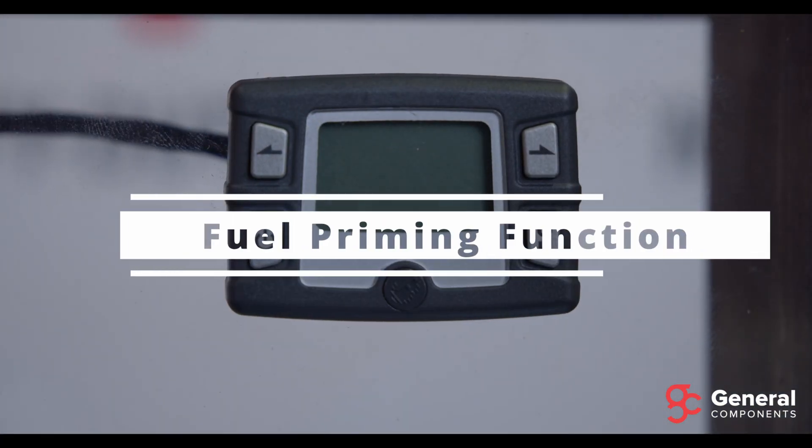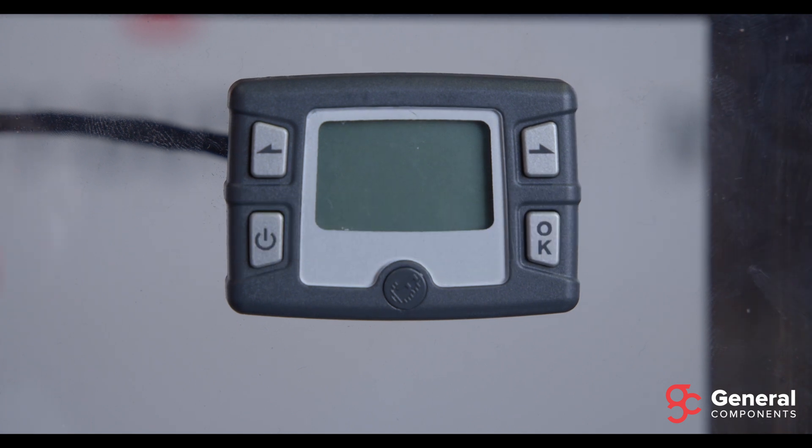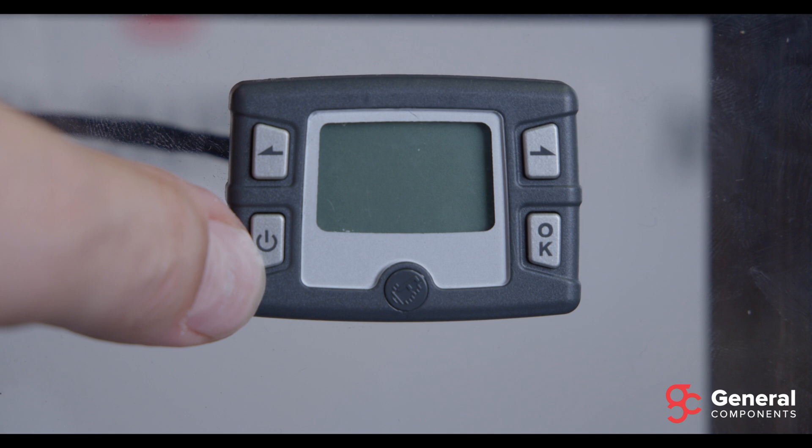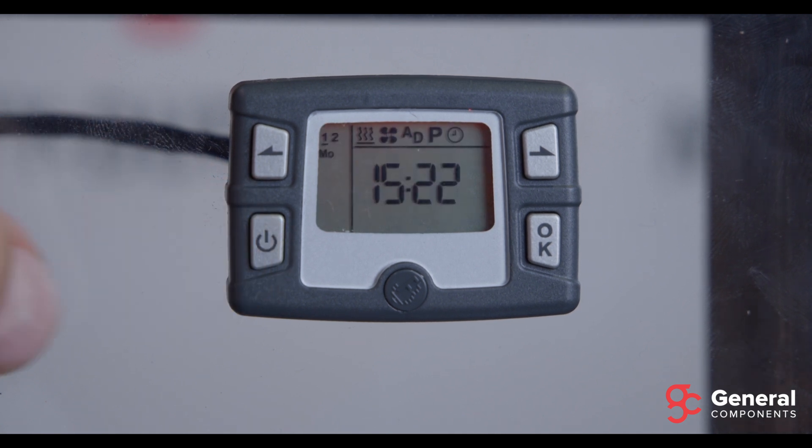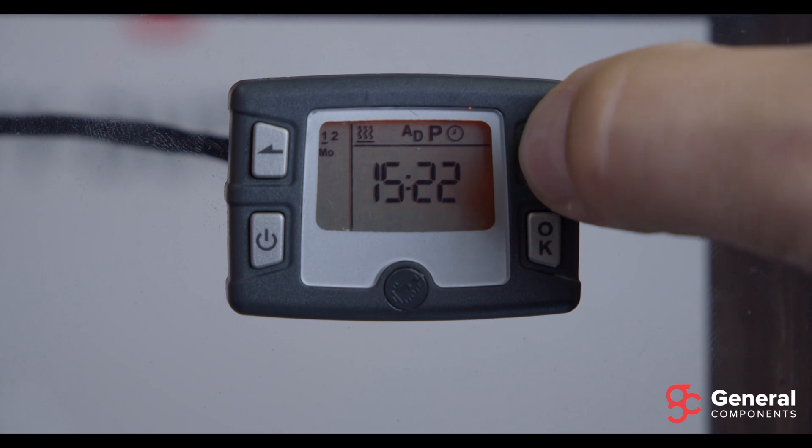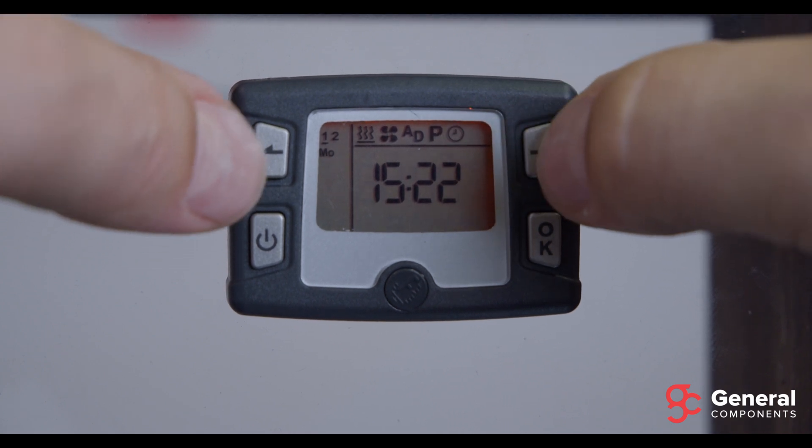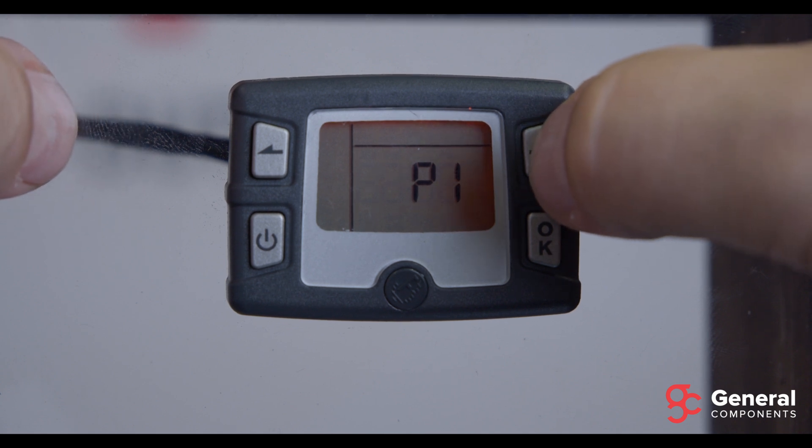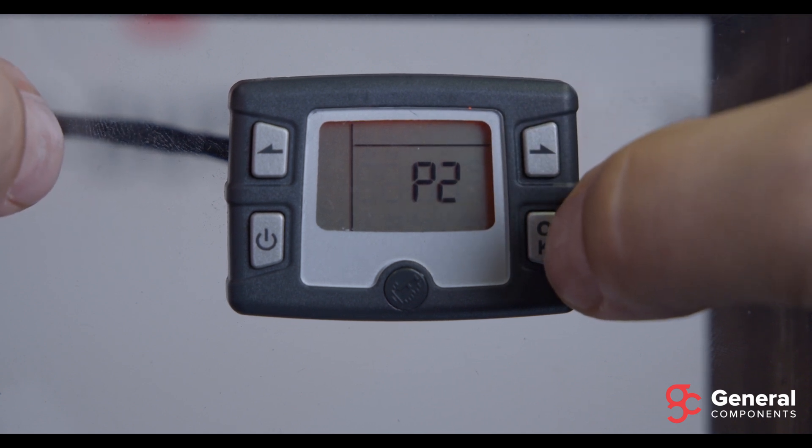Okay, so the next thing we're going to demonstrate is the fuel priming function, where you need to prime the fuel line upon initial installation or the replacement of the fuel lines. So let's wake up the timer again, navigate to the clock icon and press both arrow keys at the same time. And then we want to move over to the P2 menu item and hit OK.